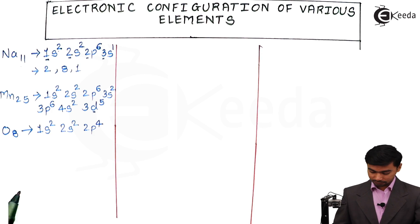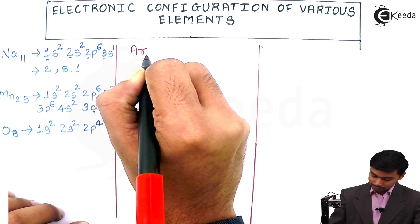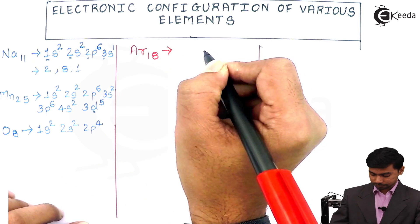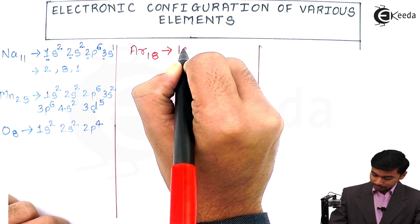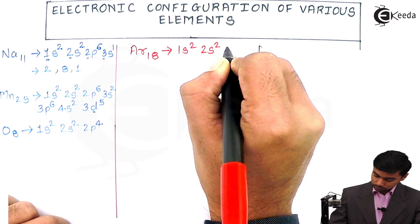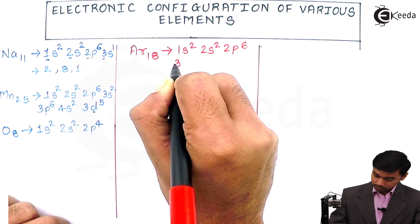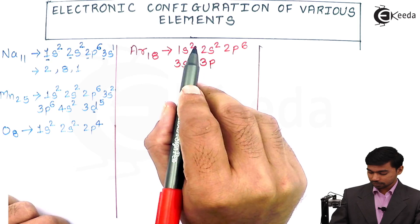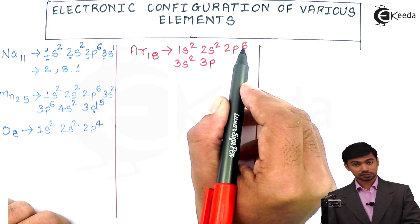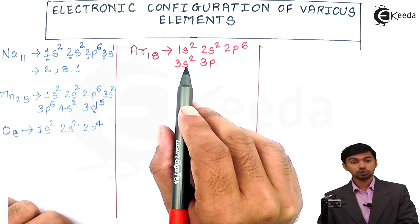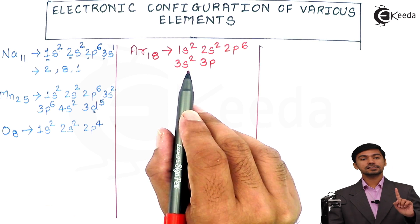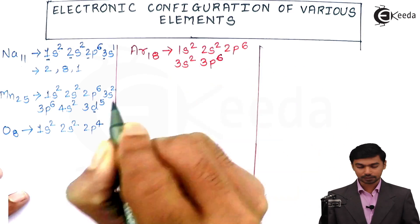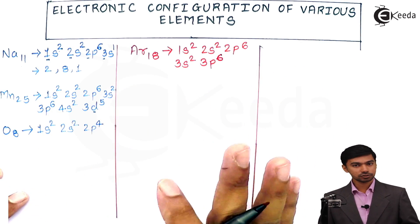Let's take one more example: argon, which has atomic number 18. Following the Aufbau order: 1s², 2s², 2p⁶, 3s² — that's 12 electrons arranged, leaving 6 remaining. The capacity of the p subshell is 6, and exactly 6 electrons remain, so 3p⁶ completes the configuration. The electronic configuration of argon is 1s²2s²2p⁶3s²3p⁶.